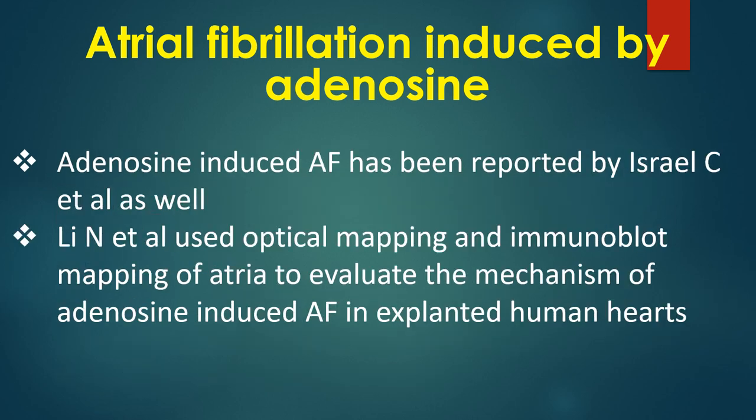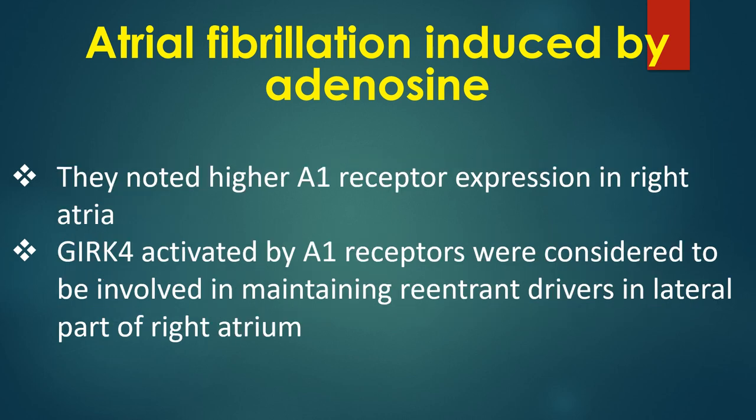Adenosine-induced AF has been reported by Israel and colleagues as well. Lee and associates used optical mapping and immunoblot mapping of atria to evaluate the mechanism of adenosine-induced AF in explanted human hearts. They noted higher A1 receptor expression in the right atria. G-protein coupled inwardly rectifying potassium channels activated by A1 receptors were considered to be involved in maintaining reentrant drivers in the lateral part of the right atrium.